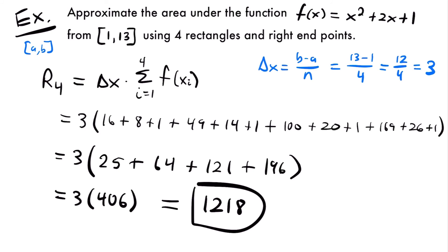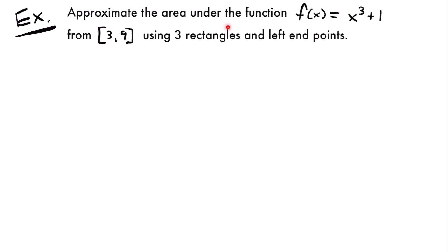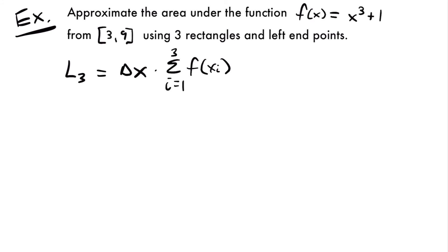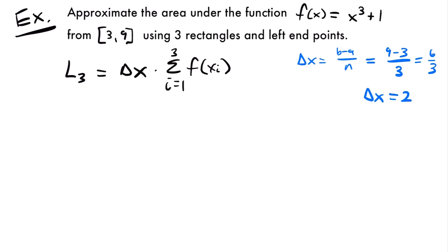For our last example, approximate the area under f of x equals x cubed plus 1 from 3 to 9 using 3 rectangles and left endpoints — so we're calculating a left Riemann sum. L sub 3 equals delta x times the sum from i equals 1 to 3 of f of x sub i. Delta x equals b minus a over n equals 9 minus 3 over 3 equals 6 over 3 equals 2. So the width of all rectangles is 2.